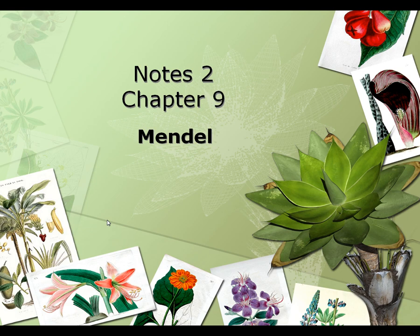Notes for chapter 9, this is section 1. These are about Gregor Mendel and his experiments on pea plants.